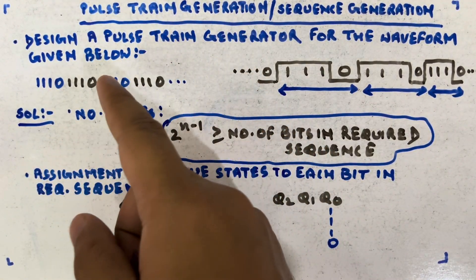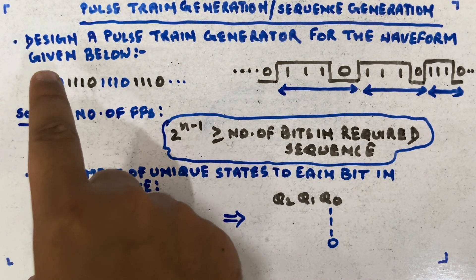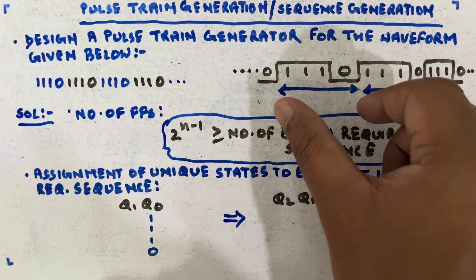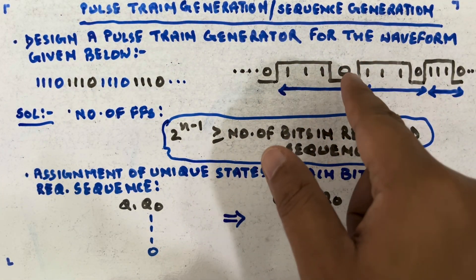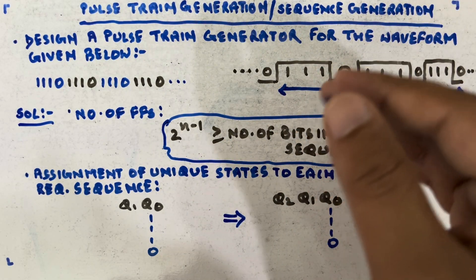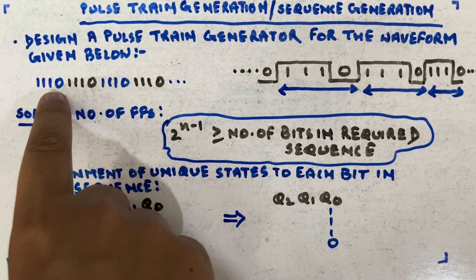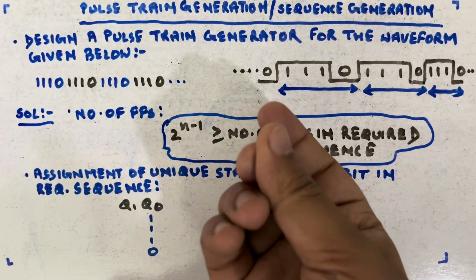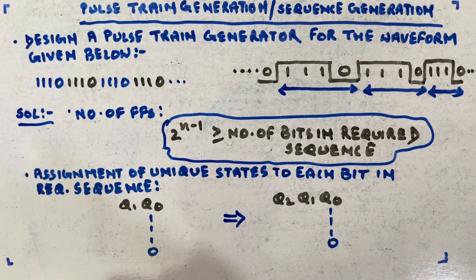Now let's take an example to understand pulse train generation. Design a pulse train generator for the waveform given. The sequence to generate is one one one zero, one one one zero, one one one zero — it keeps repeating. So the required sequence is triple-one followed by zero, and the circuit must keep generating this pattern continuously.